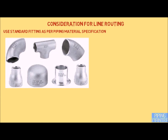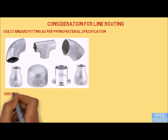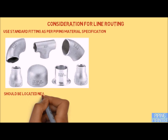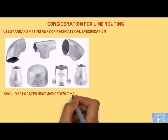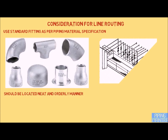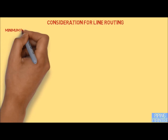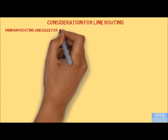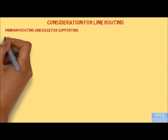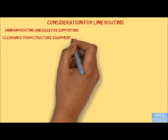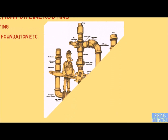Piping should be located in a neat and orderly manner. Spacing between pipes should be checked properly, considering staggered flange orientation or as per client requirement. We should also consider proper insulation thickness and thermal movement. Piping should be as short as possible, with ease of supporting. We need to provide at least 50 mm to 200 mm clearance from structures, equipment, or foundations for wrench access and other requirements.